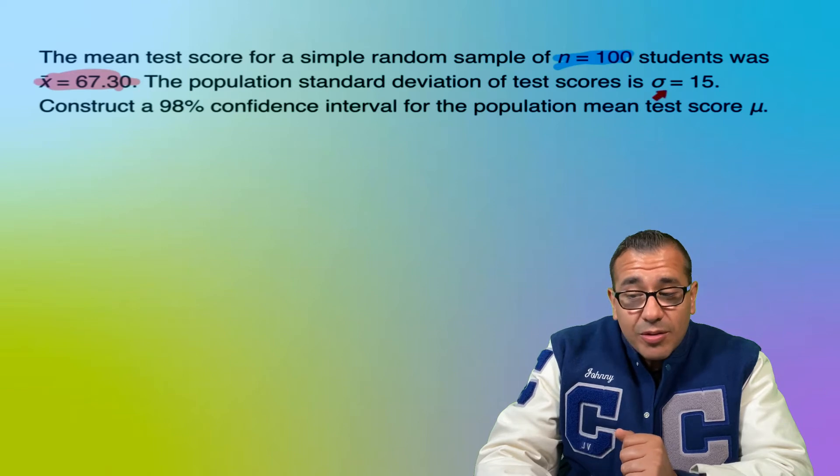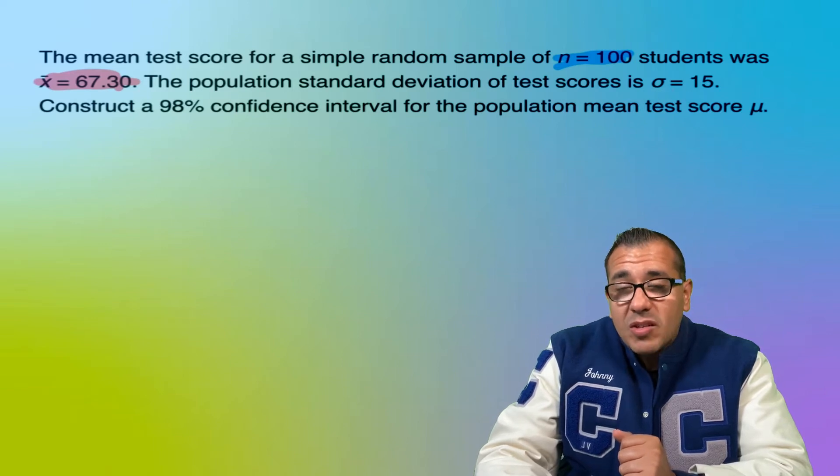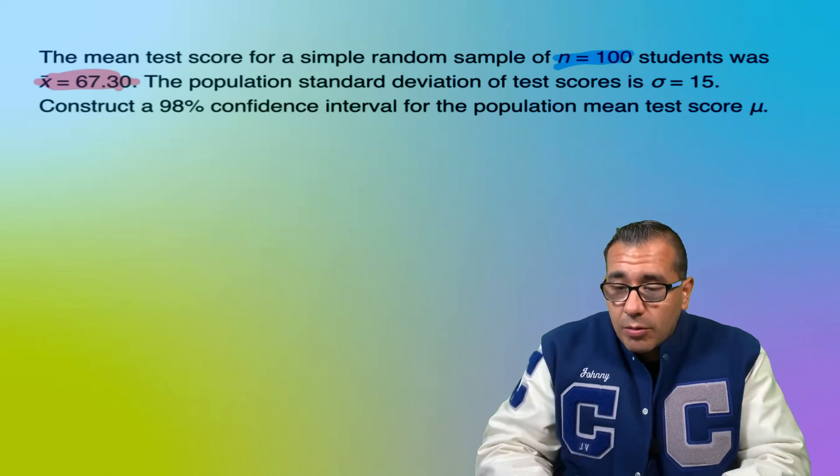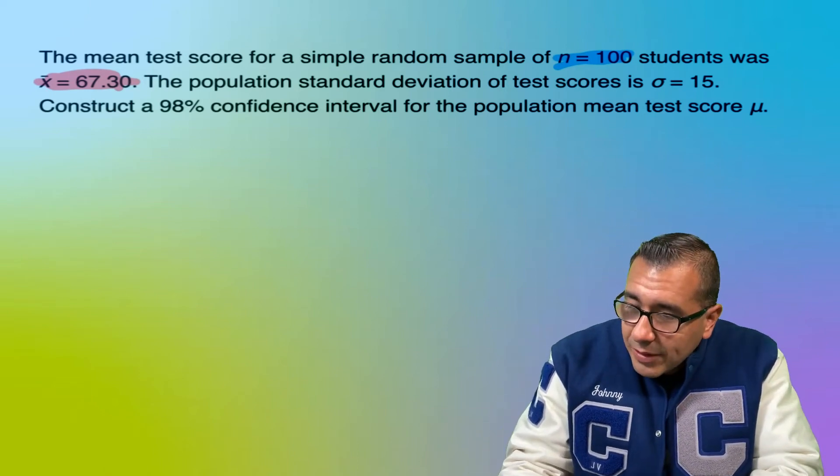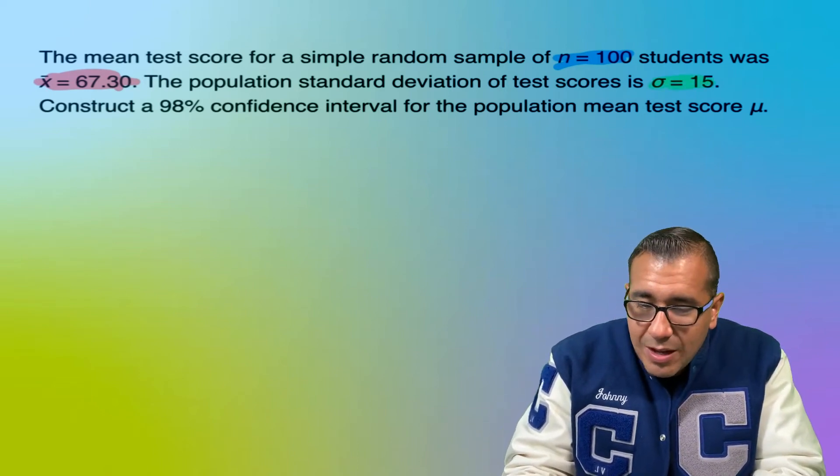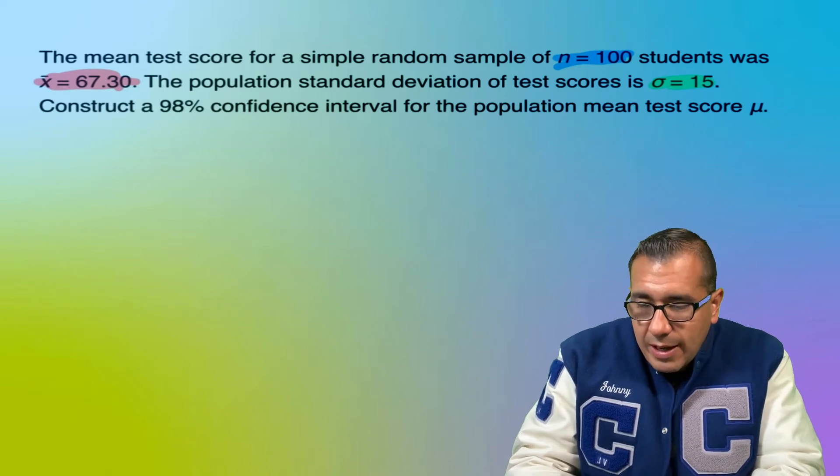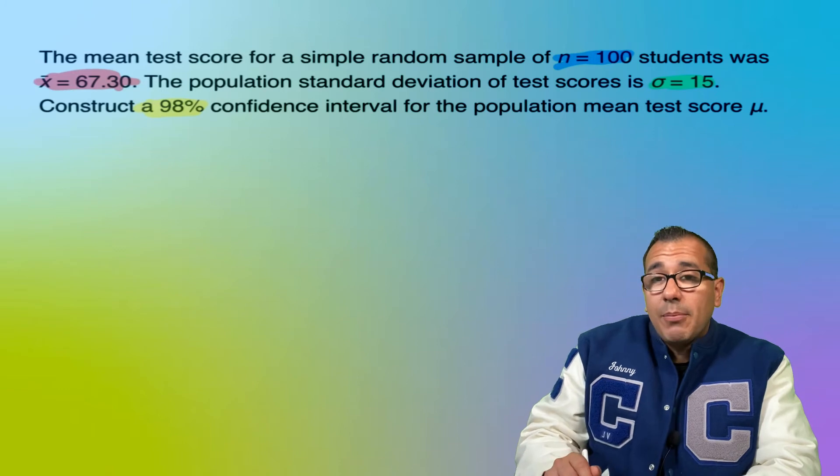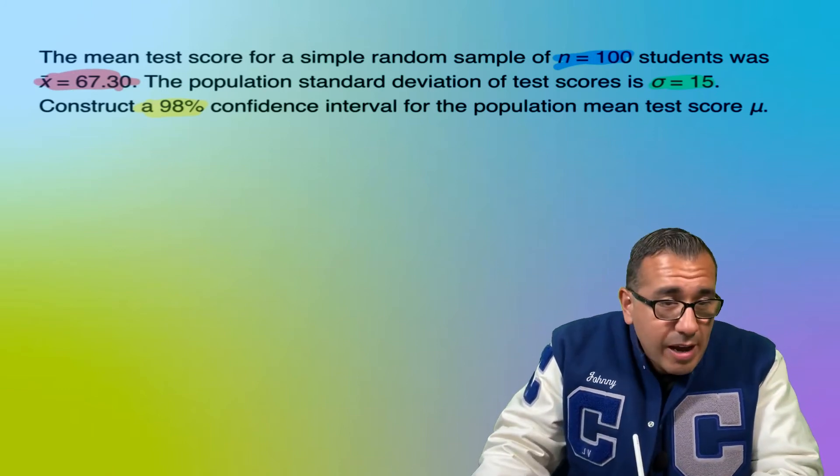So here, make sure that you understand that this is your population standard deviation that's given to you. All right, so let's walk through the program. And of course, we're going to need to know what is our confidence level, which is 98%. All right, so follow me. Let's walk towards our calculator.